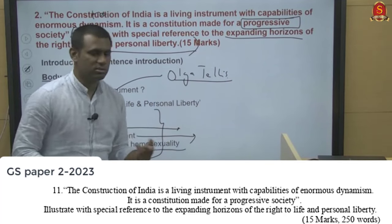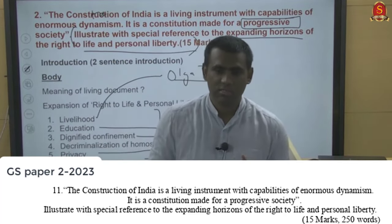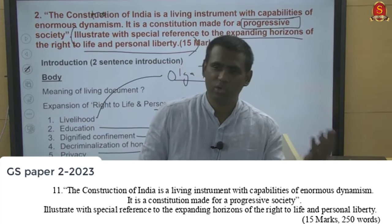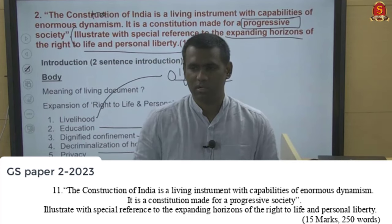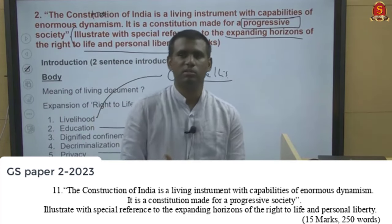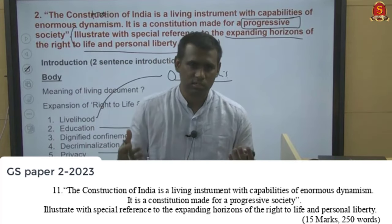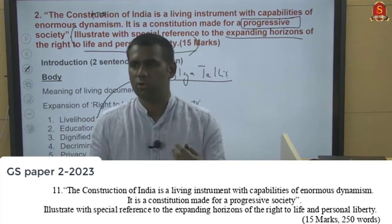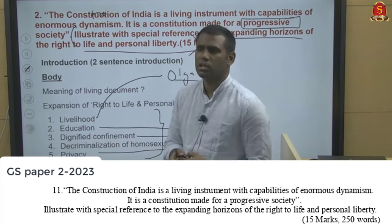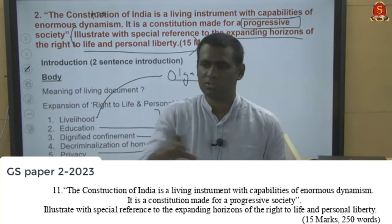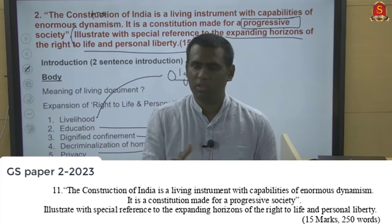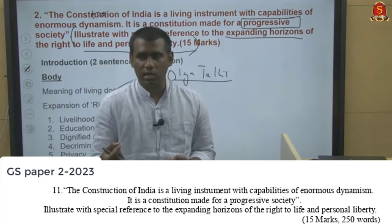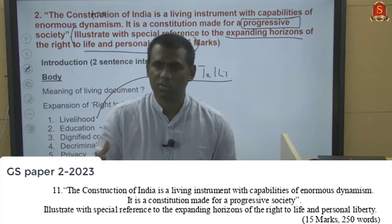Another example: in the Navtej Singh Johar case, homosexuality was decriminalized, reflecting a very liberal outlook. Victorian-age morals imposed through the IPC criminalized it, yet Indian society historically accepted diverse sexuality — as seen in Khajuraho temple depictions and historical accounts. Decriminalization through Article 21 creates a progressive society that is accepting of individuals' sexual orientation.